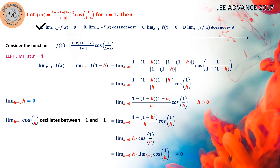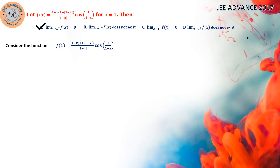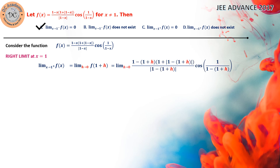Now we need to test for the right limit as well. To find the right limit, we use the definition: limit x tends to 1 plus of f(x) equals f(1 plus h) as limit h tends to 0. Substituting wherever we see x, we replace by 1 plus h and do some simplification. So it will be equal to (1 plus h) multiplied by h tends to 0 and cos(1/h).